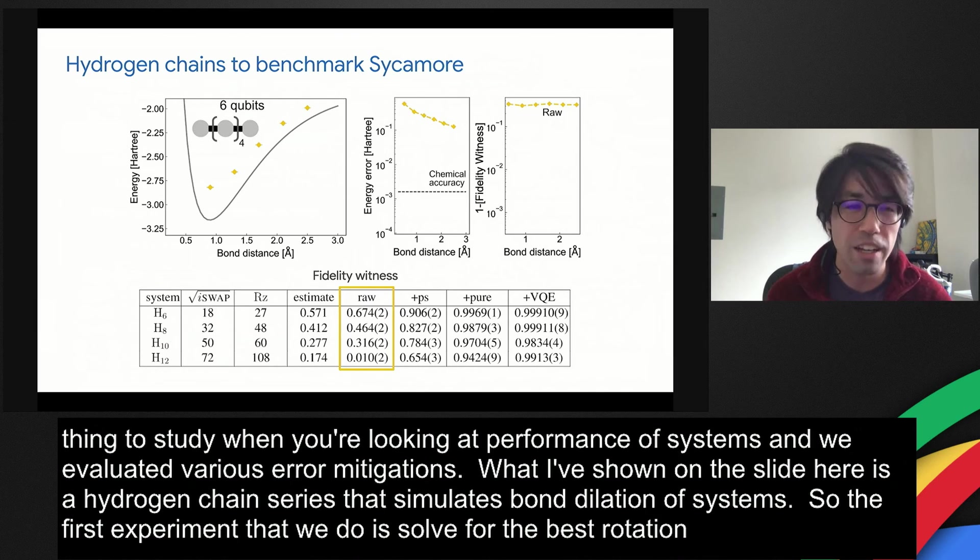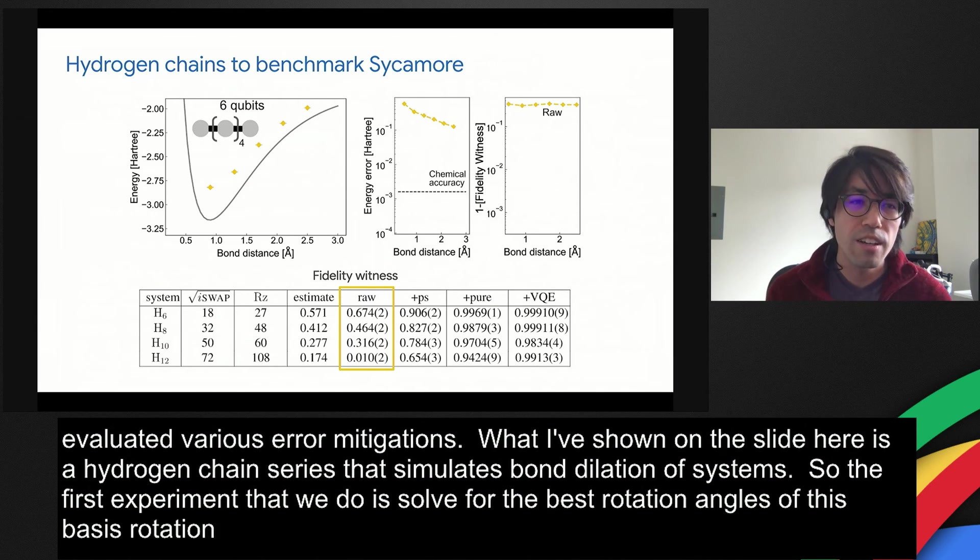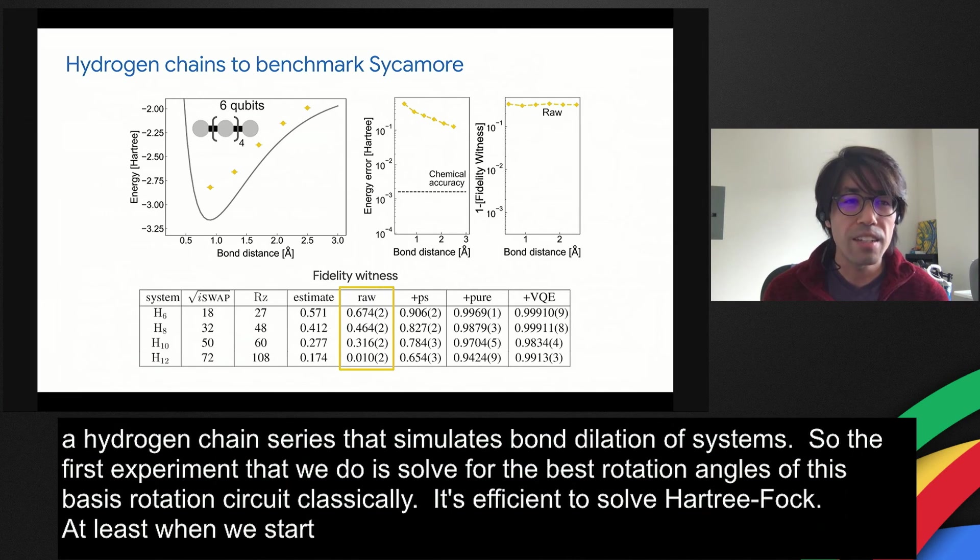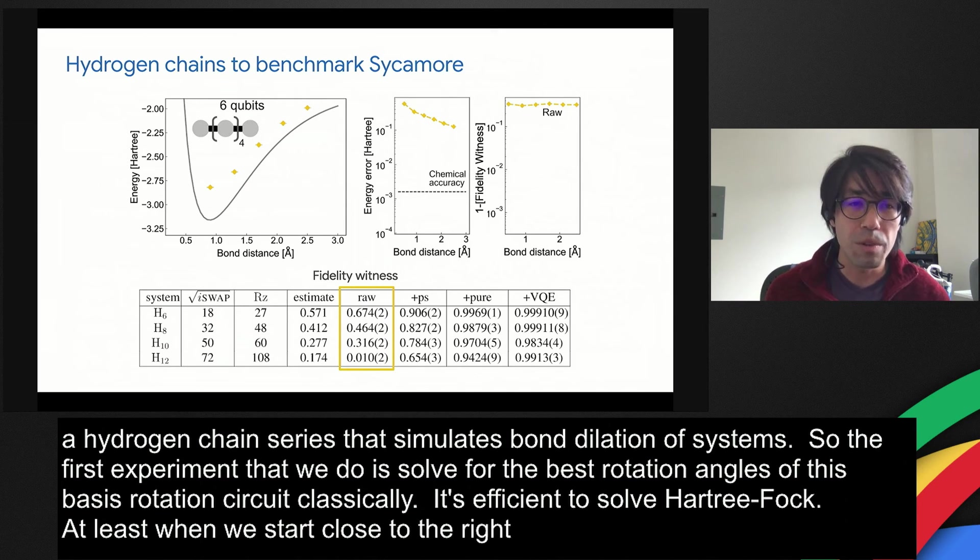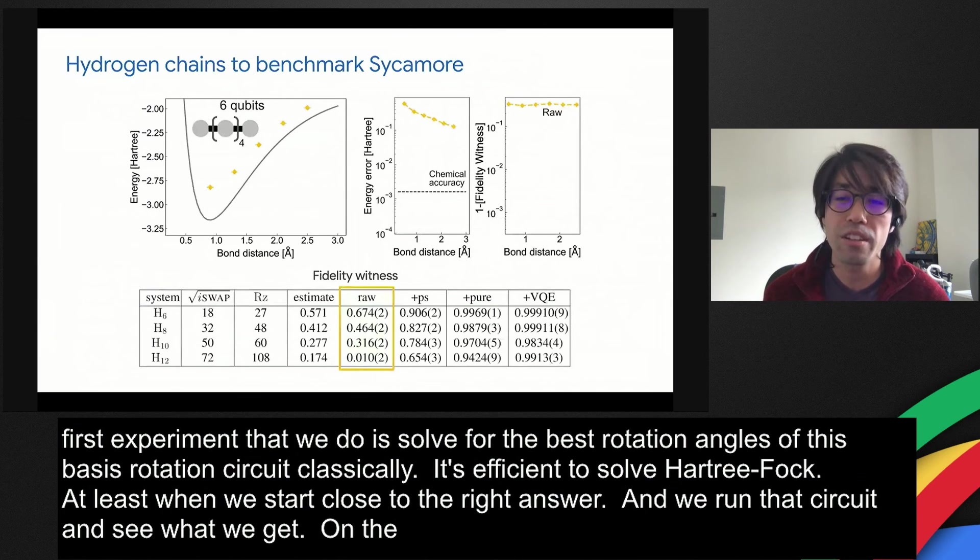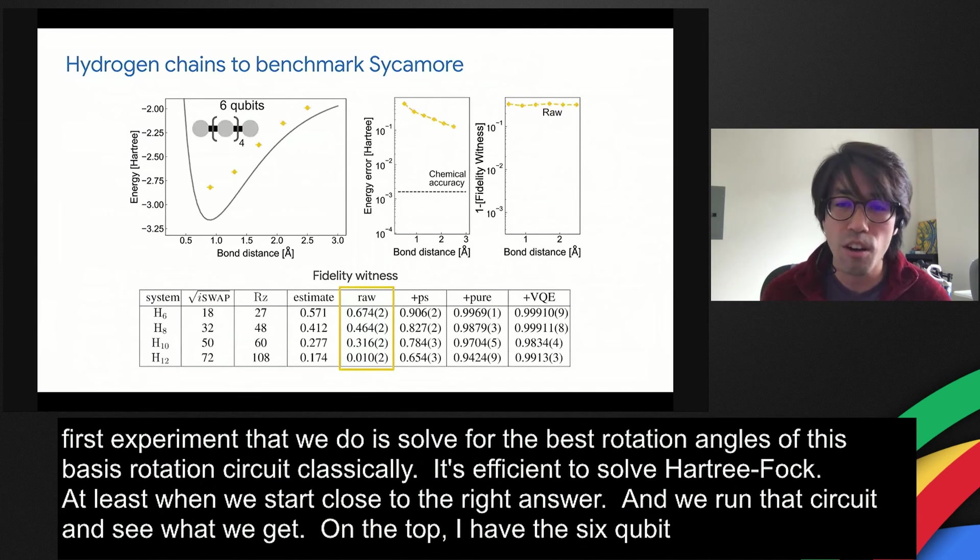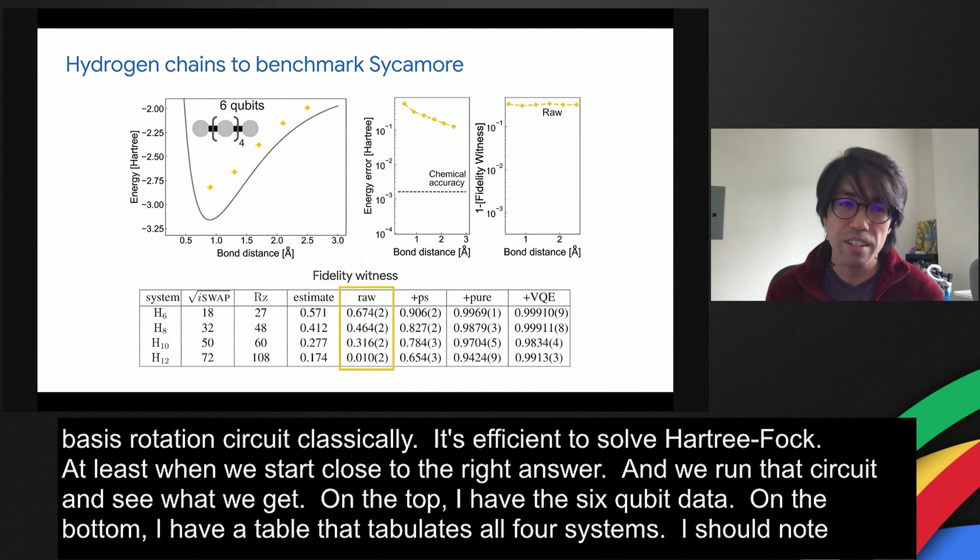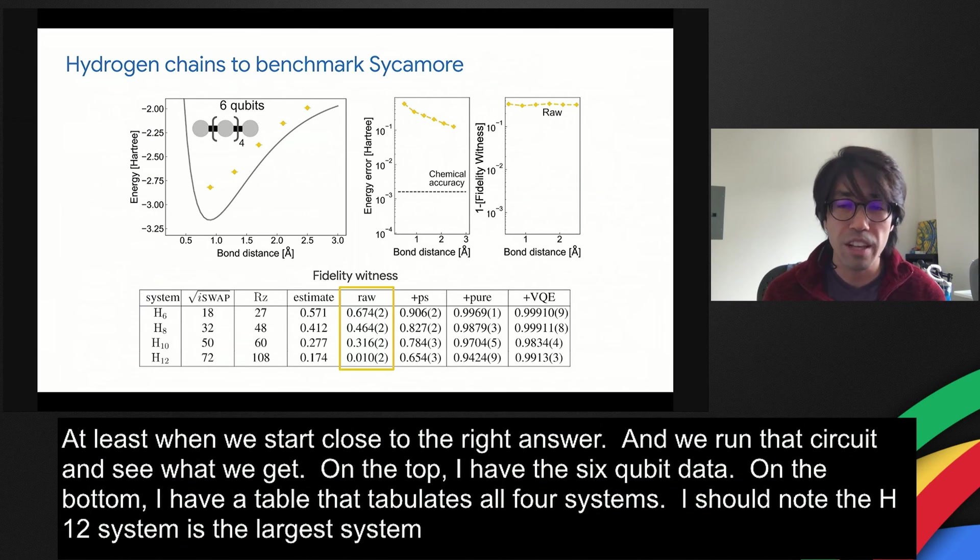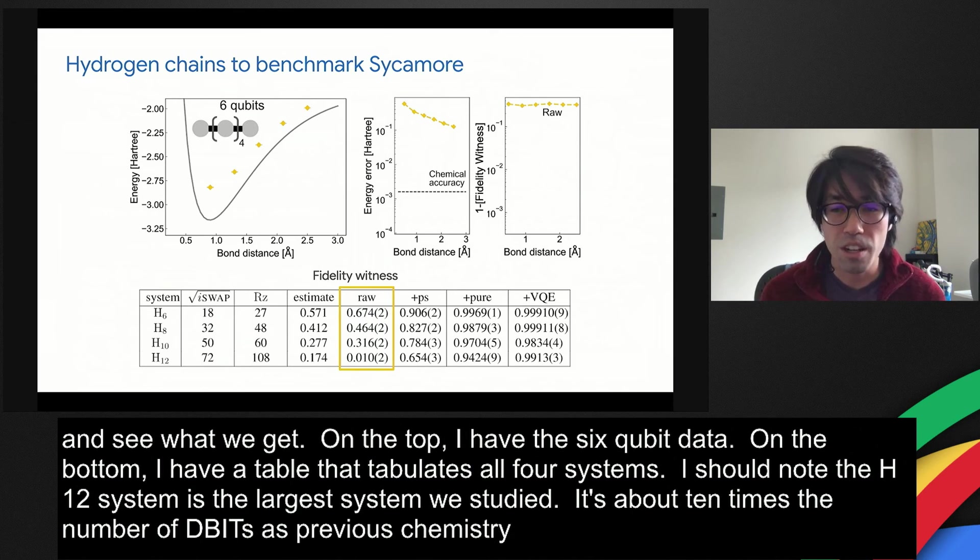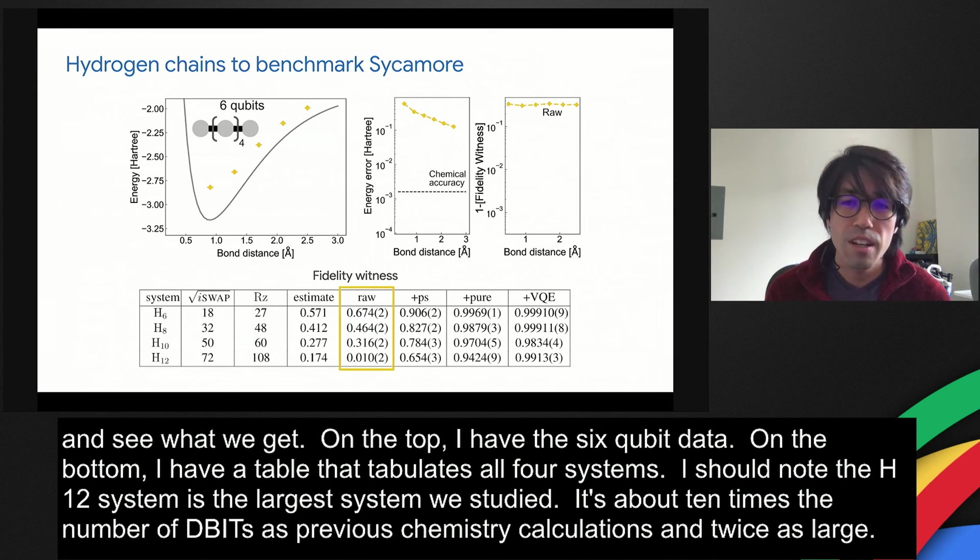The first experiments that we do is we solve for the best rotation angles of the basis rotation circuit classically. You can do that because it's efficient to solve Hartree-Fock, at least when we start close to the right answer. And we run that circuit and we see what we get. On the top, I have the six qubit data. On the bottom, I have a tabulated table that tabulates all four systems. I should note the H12 system is the largest system that we studied. It's about 10 times the number of gates as previous chemistry calculations and twice as large. It has 72 square root i-swaps and 108 RZ gates.